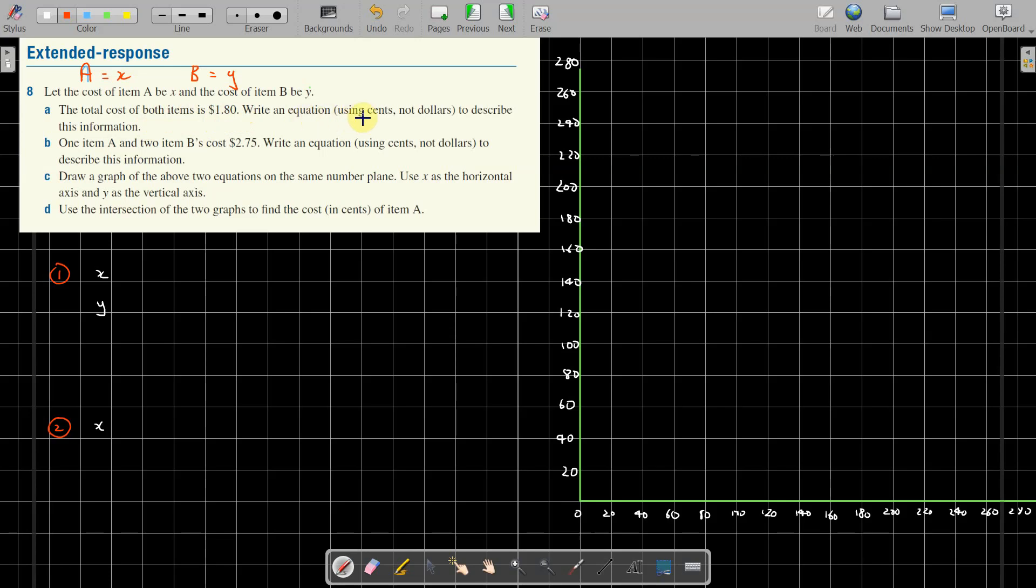Cost of both items is $1.80. Write an equation using cents, not dollars, to describe this information. The cost of both items - well, the equation for that one, part A up here, would be X plus Y equals... cents not dollars, $1.80... there we are, that one.